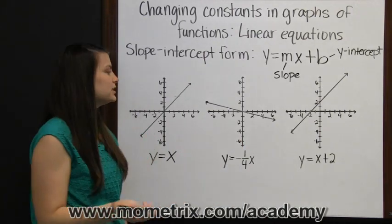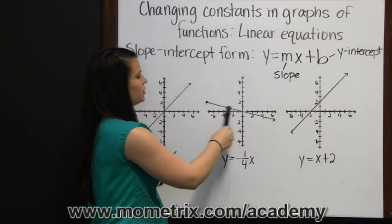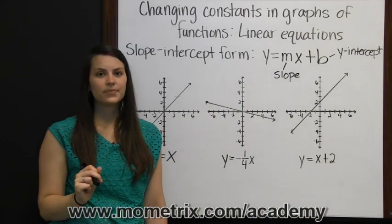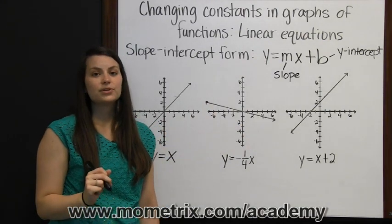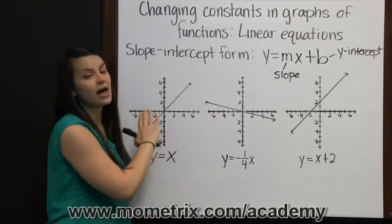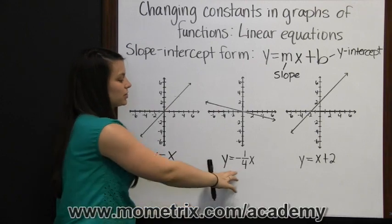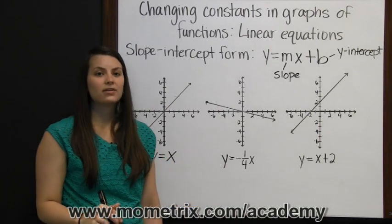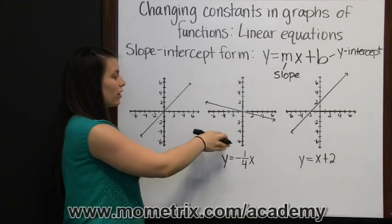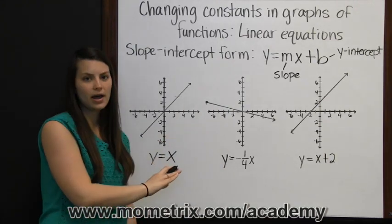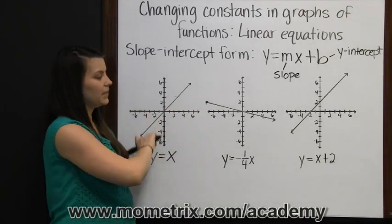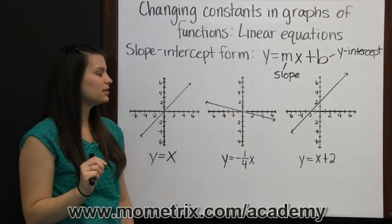You may also notice that this line is not as steep as the first and the last. The greater the absolute value of the slope, the steeper the line is. The absolute value of this slope, negative 1 fourth, would be positive 1 fourth, and a fourth is less than 1, which is why this line is not as steep as these lines are in the first and the last graph.